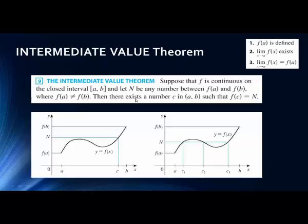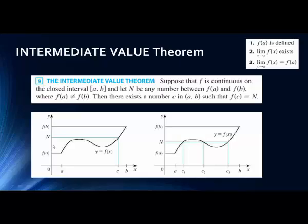Then there exists a number C in (A, B) such that F(C) equals N. All this is saying is that if I have a continuous function going between A and B, and those values aren't equal, and there's another value N between them, then at some point the function is going to hit that value.